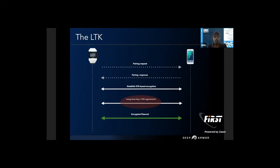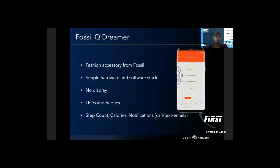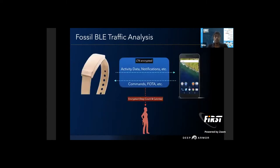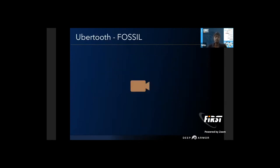Once the LTK is agreed upon, all communication between the device and phone will be encrypted. We are going to take the Fossil Q Dreamer — this device has no display and sends calories, step count, and other notifications. It uses the LTK to encrypt communication between device and phone. So when we capture the traffic, we are expected to get encrypted step count and calories, unlike the previous example where we were getting unencrypted data. Let's jump into the demo.